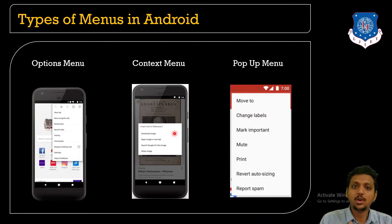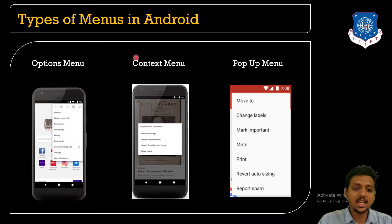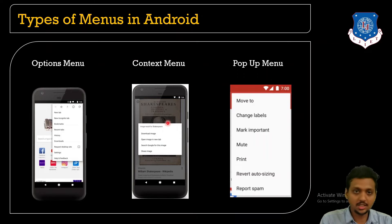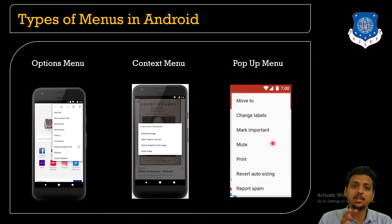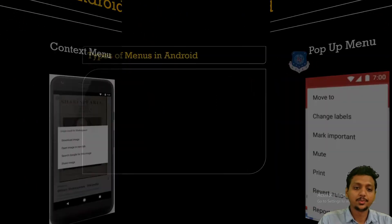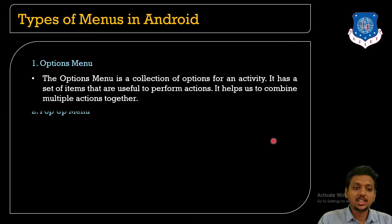So to summarize: the option menu is whatever menu we find on the top toolbar — we click there to get the menu. The context menu appears when you long-press on something. And the pop-up menu appears on a single click event, popping up on your screen.